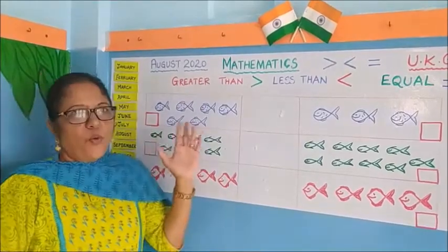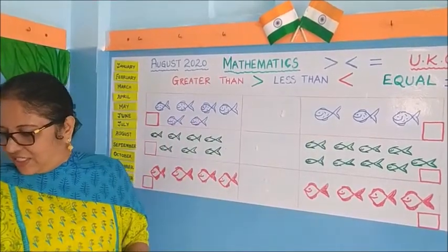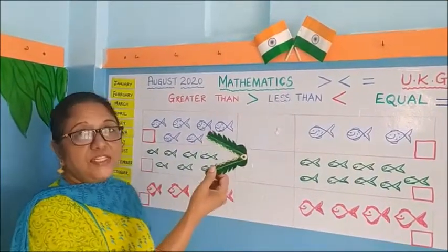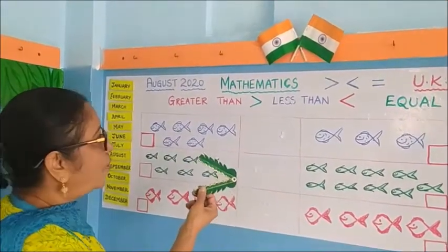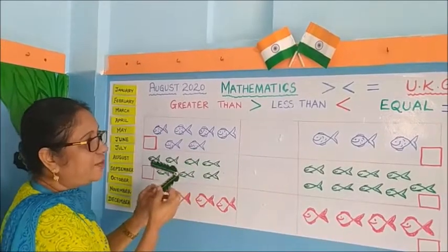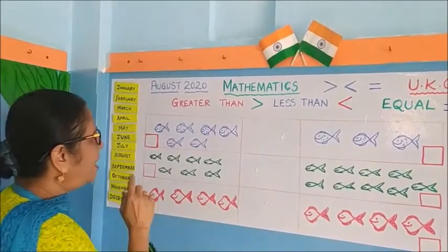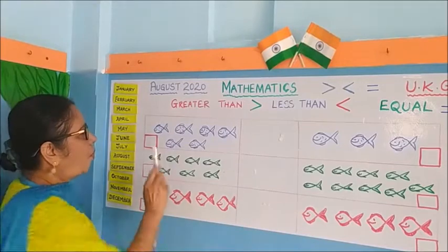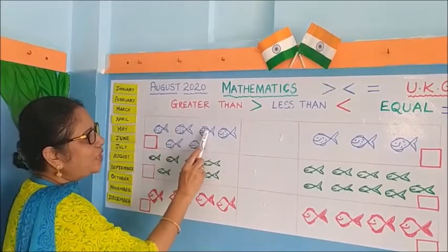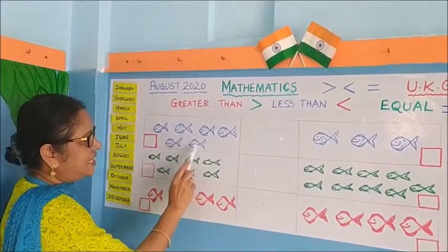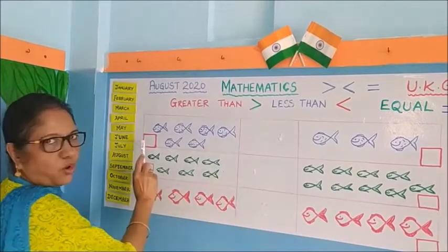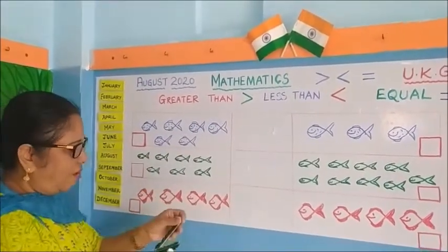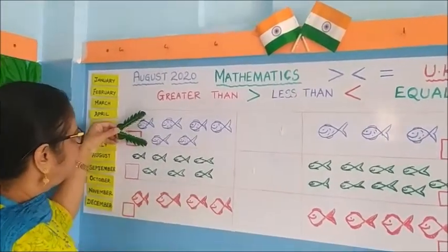Now let us see our alligator. Which side is it going to eat? First, the blue fishes here - let's count the number of fishes. One, two, three, four, five, six. There are six blue fishes in this box. This alligator has seen six fishes.